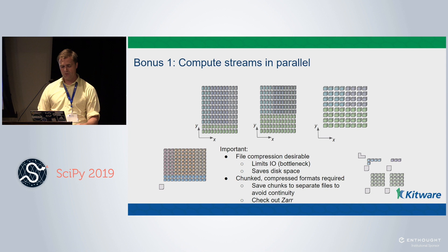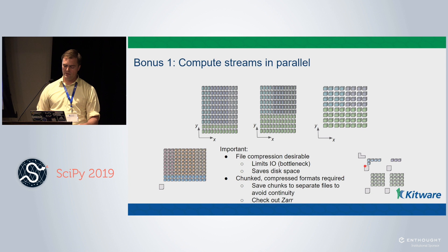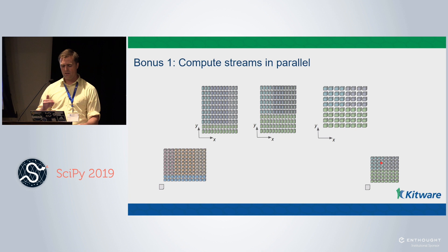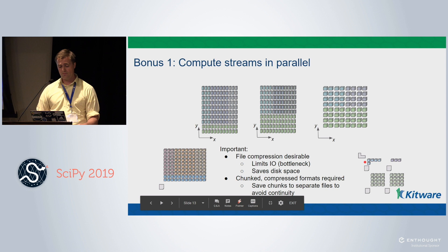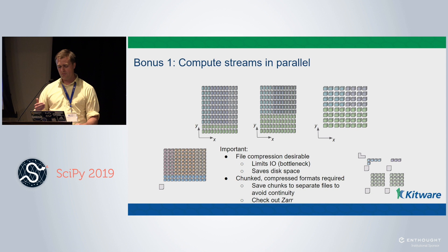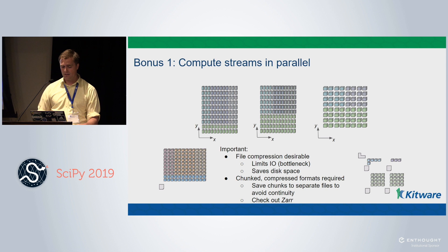It's a little tricky though, because when we create the compressed output file, if we use a single file it has to be contiguous on disk — all the bytes one after the other. But we don't know the size of the compressed chunk until after computation is done. A very neat solution produced by the community are chunked compressed file formats, like Zarr. These solve the problem by separating chunks into different files, so you don't have to worry about the size of the next chunk.